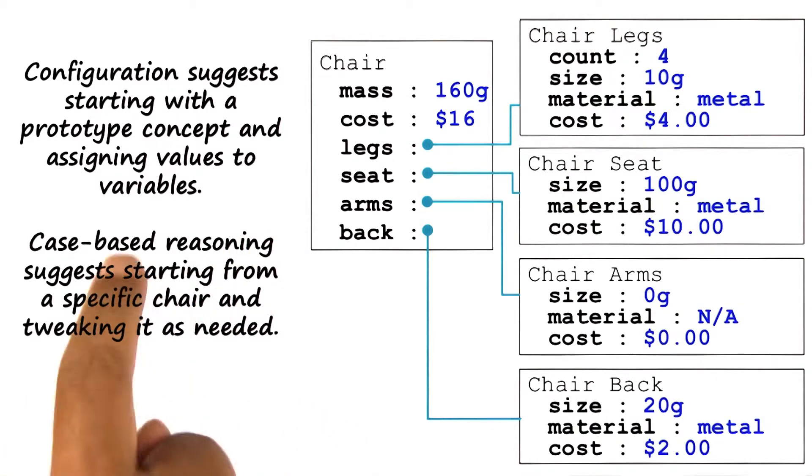If the agent uses the method of case-based reasoning, then it will go into the case memory, retrieve the closest matching case, and then start tweaking the case.